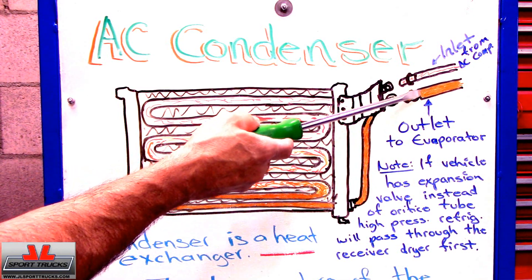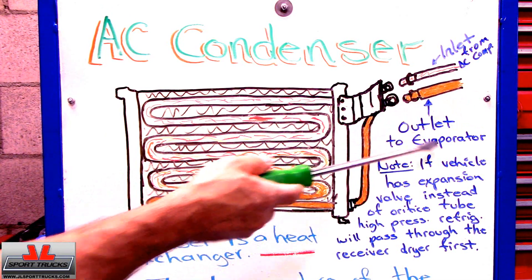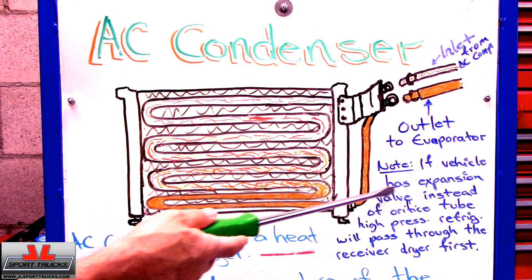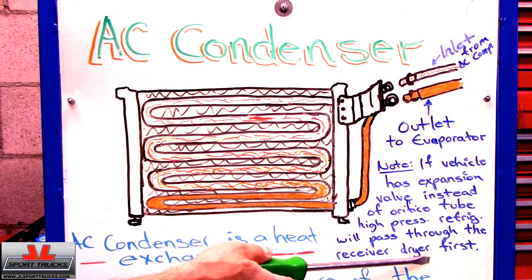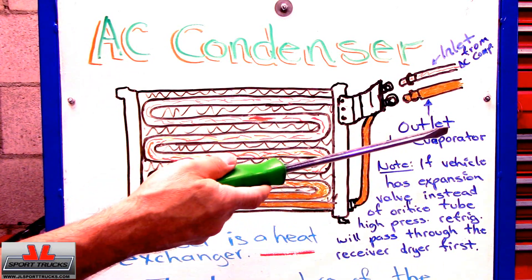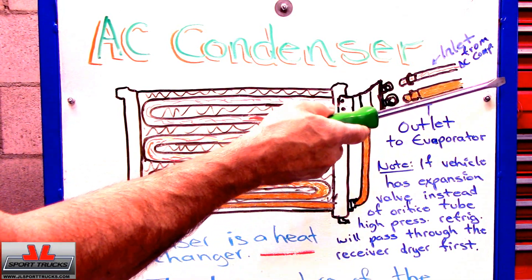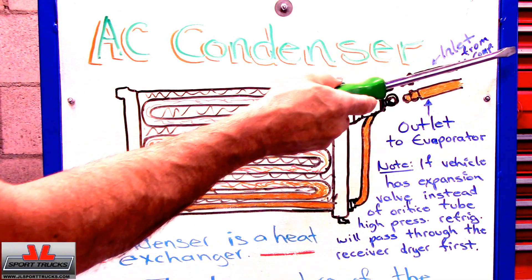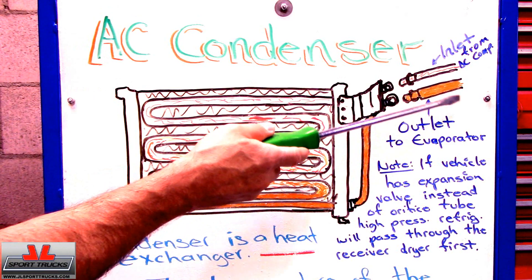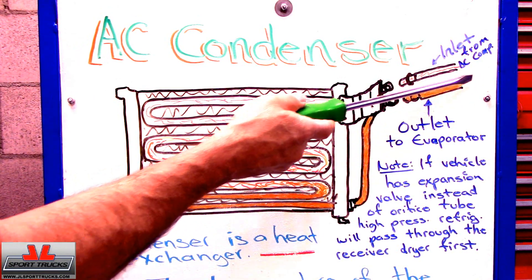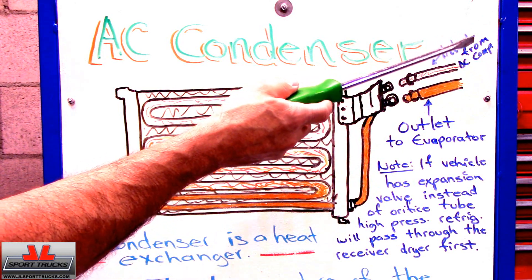Once the refrigerant leaves, the condenser is going to travel towards the evaporator. If the vehicle has an expansion valve instead of an orifice tube, the high pressure refrigerant will pass through the receiver dryer first. So if your car has an expansion valve, this line right here is going to be connected to the dryer — the refrigerant will pass through the dryer and then go to the evaporator. If your vehicle has an orifice tube, this line will be connected directly to the evaporator, and when the refrigerant leaves the evaporator as a low pressure gas, it's going to go through an accumulator.